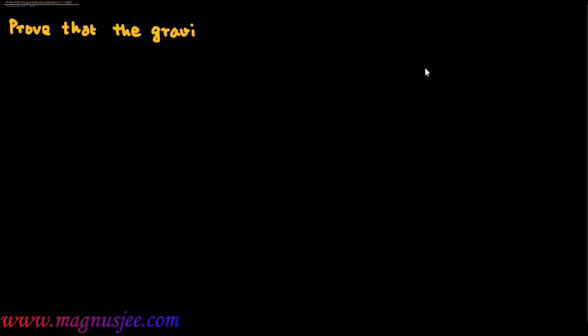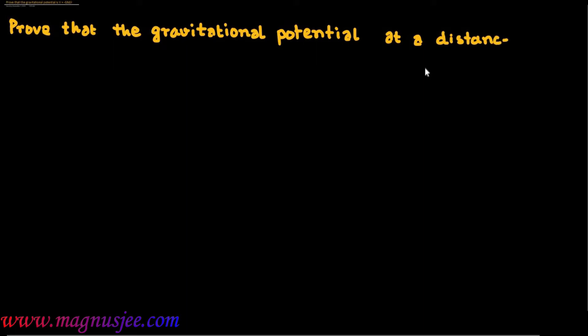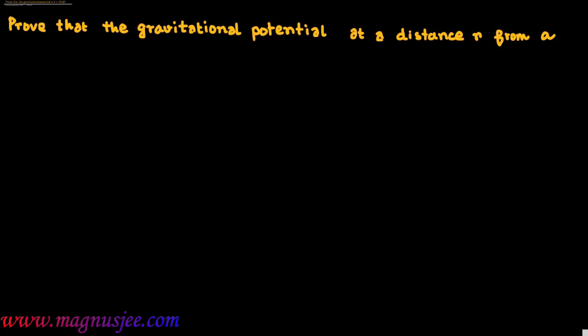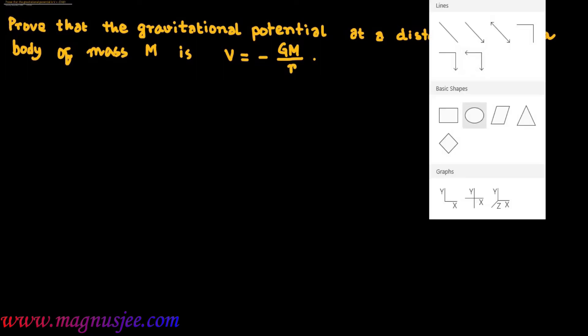Prove that the gravitational potential at a distance small r from a body of mass capital M is V equal minus GM by r, where capital G is the gravitational constant.